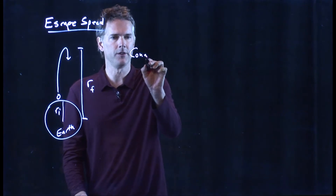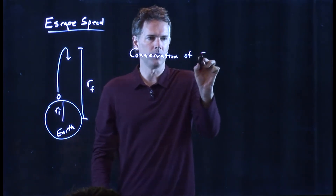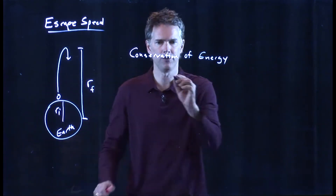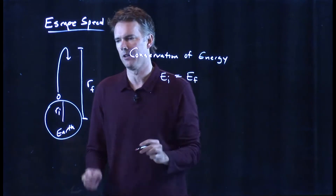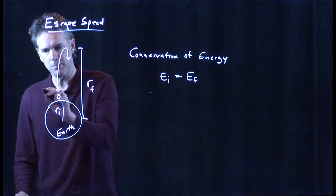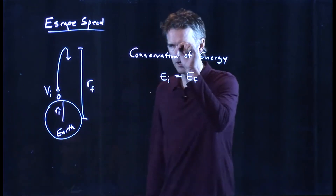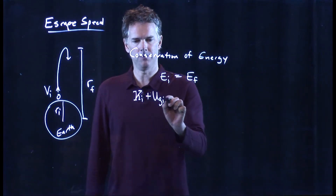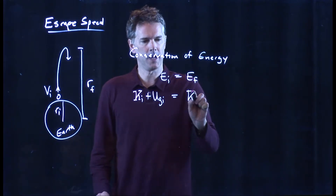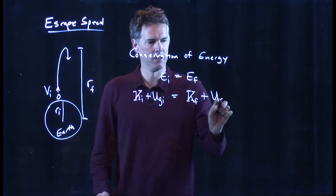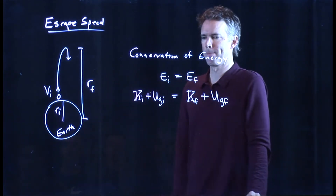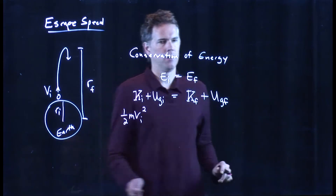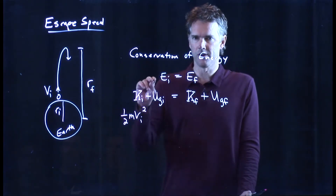Conservation of energy — we can always use it. It just says the initial energy has to equal the final energy. If I am launching this thing up with a speed v_initial, my initial energy includes kinetic energy and gravitational potential energy. At the top, maybe it has kinetic energy, maybe not. The kinetic energy is one-half m v_i squared — that's always the kinetic energy of something.